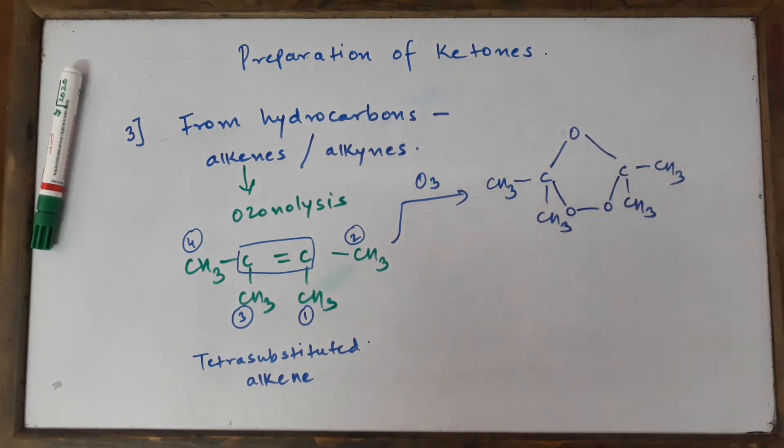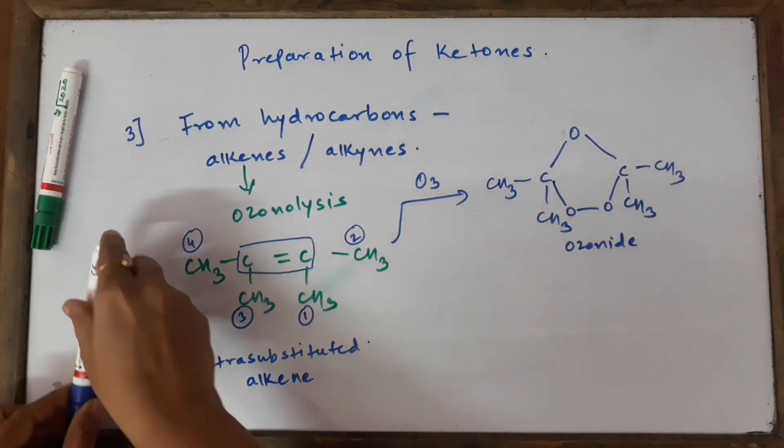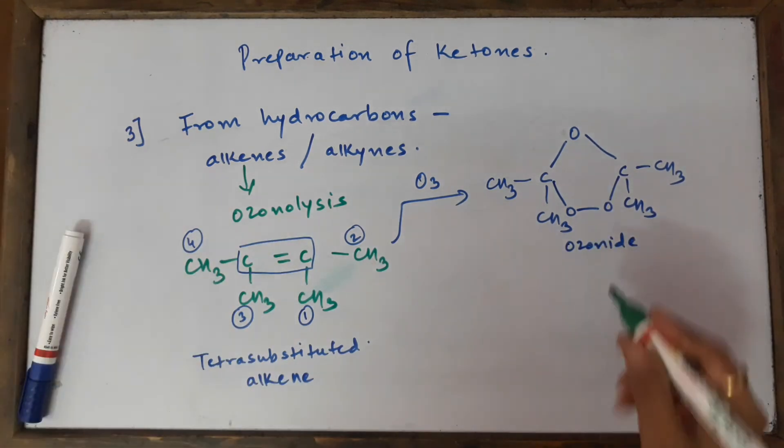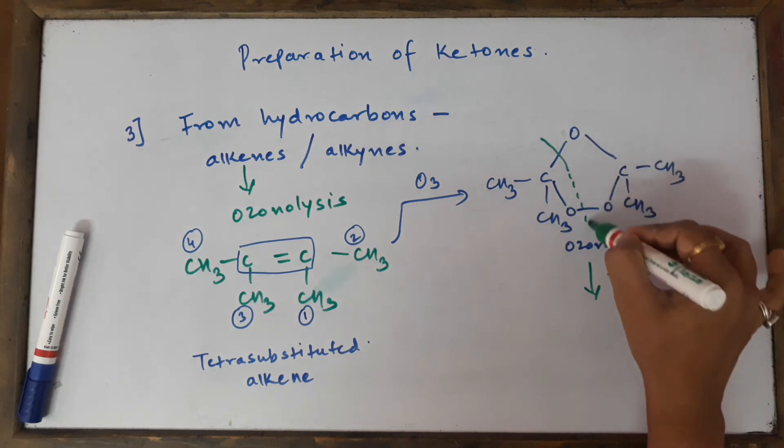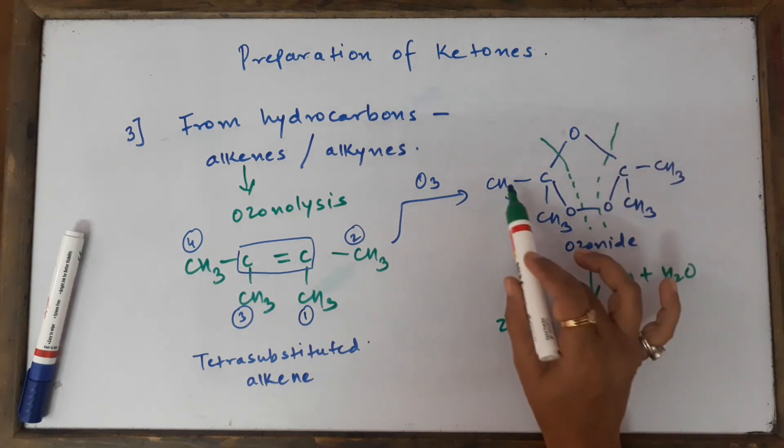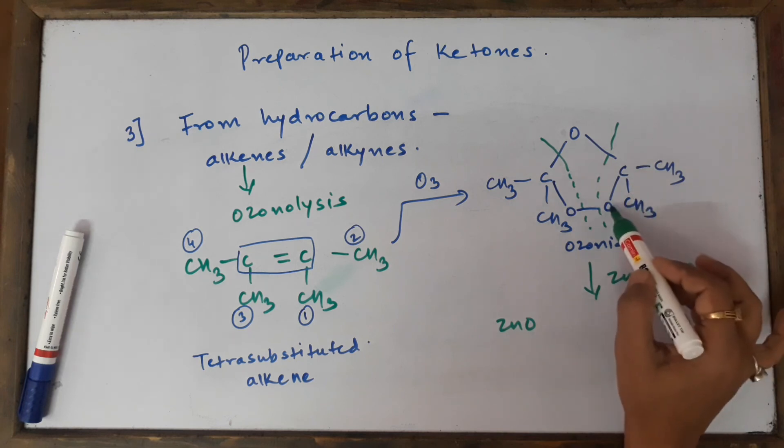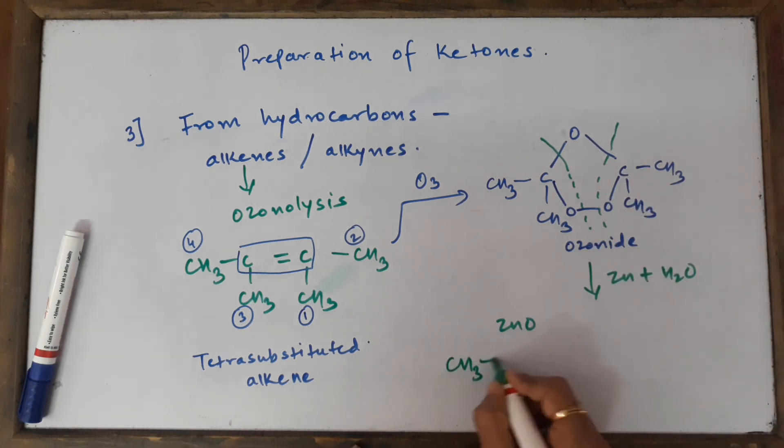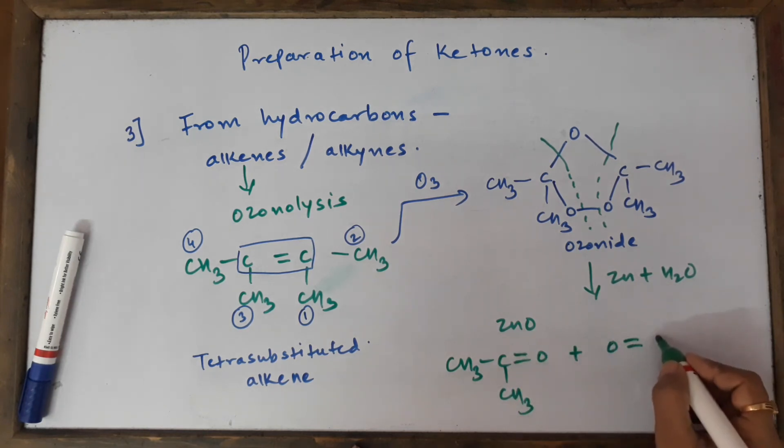Now we are going to break it, reduce it—by using zinc and water (Zn + H2O). This is the way the bond is going to break and we'll get ZnO. This is going to be CH3-C(=O)-CH3 from both sides. So we get ketones: CH3-C(=O)-CH3 plus the same thing from the right-hand side.